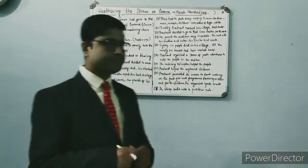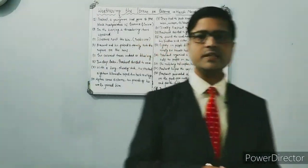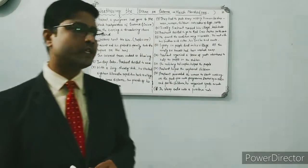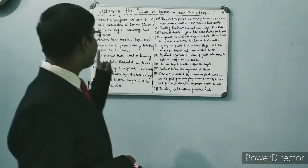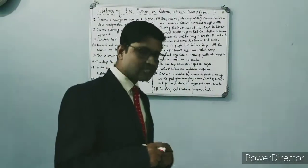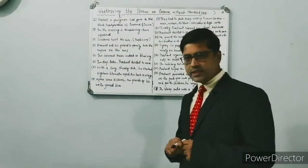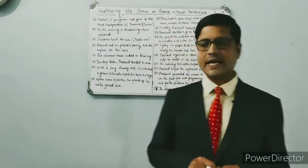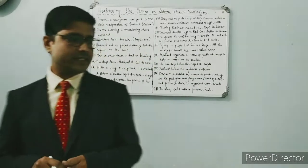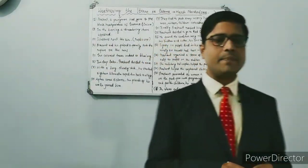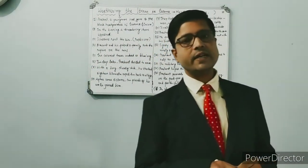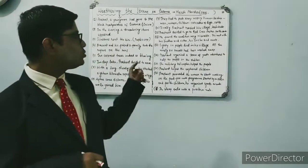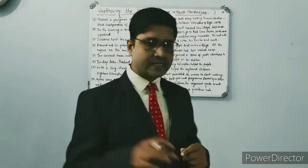The story 'Weathering the Storm in Ersama' features a protagonist named Prashant, a young man. The date given is 27th of October 1999, seven years after an unfortunate incident when his mother died. The story describes a setting where he had gone to a place.